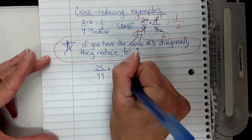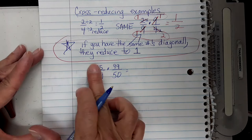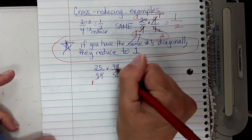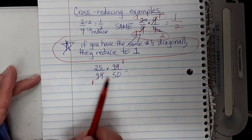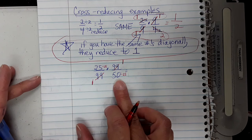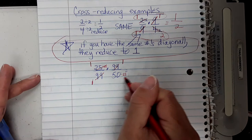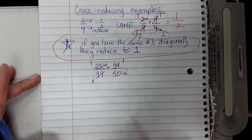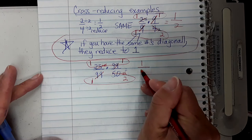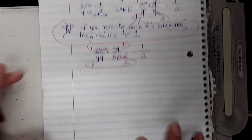Let's try 25 over 99 times 99 over 50. You don't want to multiply those big numbers directly. First, the 99s are the same diagonally, so they become ones. Then look at 25 and 50: divide both by 25. Twenty-five divided by 25 is 1, and 50 divided by 25 is 2. Instead of multiplying 25 × 99 and 99 × 50, you now only do 1 × 1 and 1 × 2. Much easier.